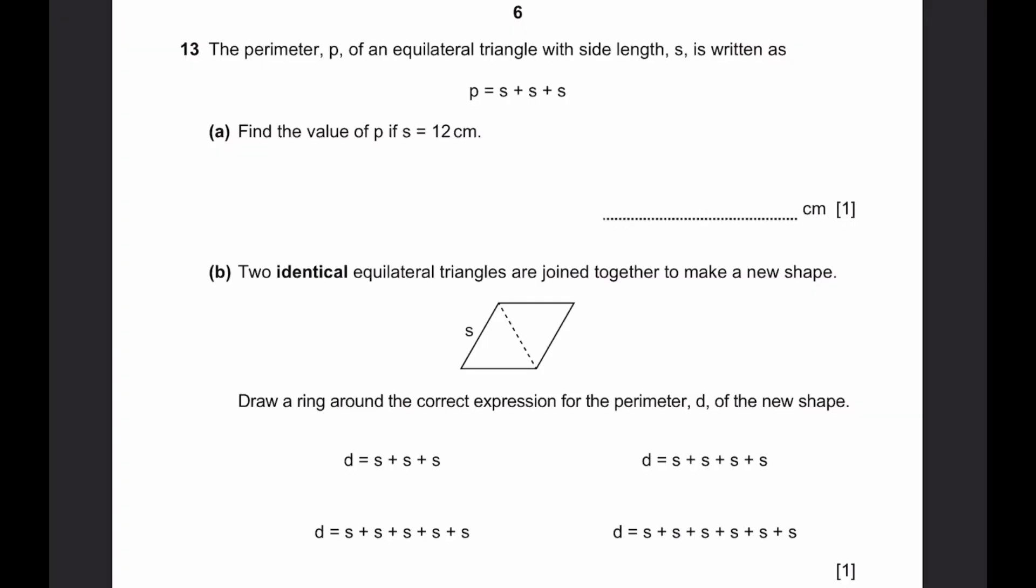Question 13. The perimeter p of an equilateral triangle with side length s is given as p equals s plus s plus s. A. Find the value of p if s equals 12 cm. p is equal to 12 plus 12 plus 12. Just replacing s equals 12. So, 36 cm. That's the answer.